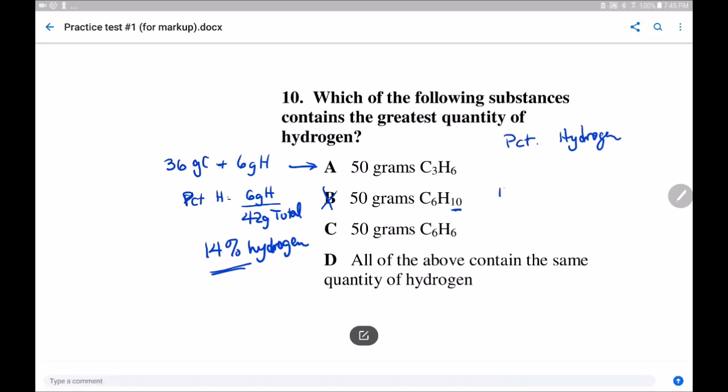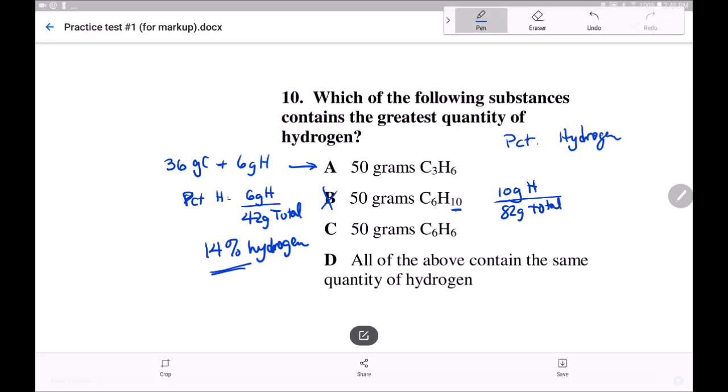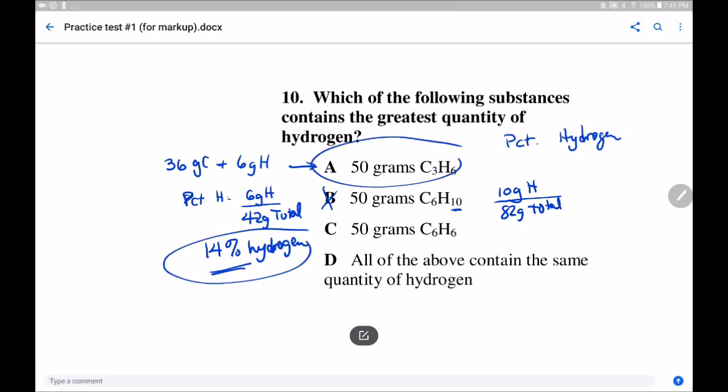B, the false choice, is 10 grams of hydrogen out of 82 grams total. That's only about 12 percent hydrogen, and C is even worse. So A is the correct answer based on this value here.